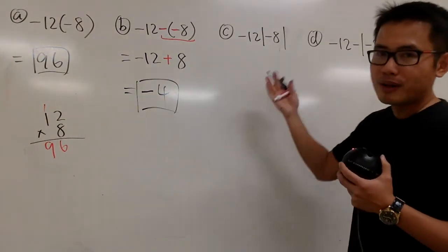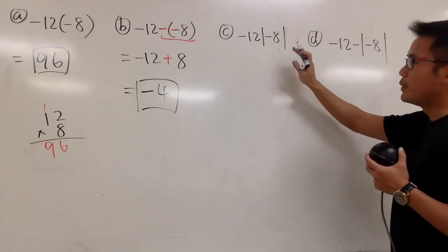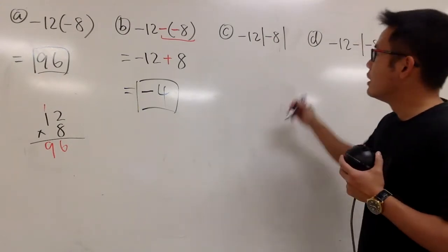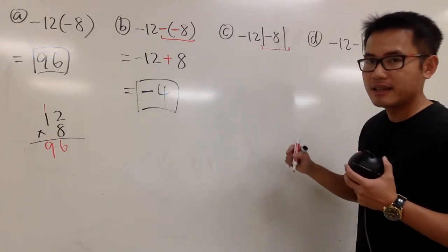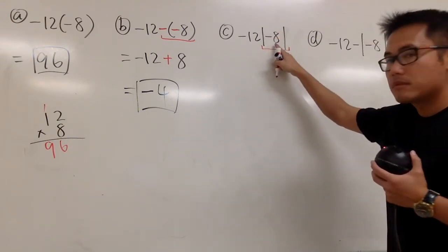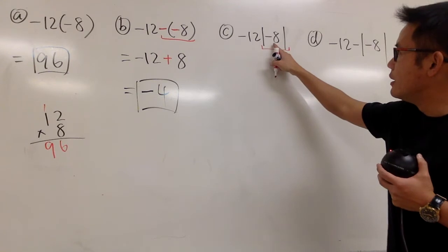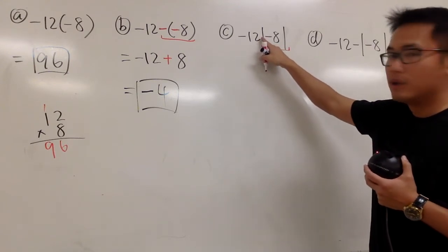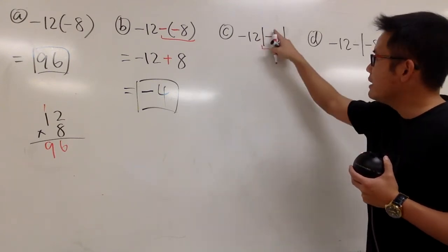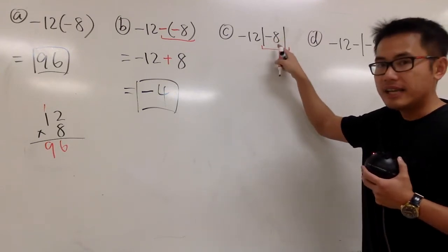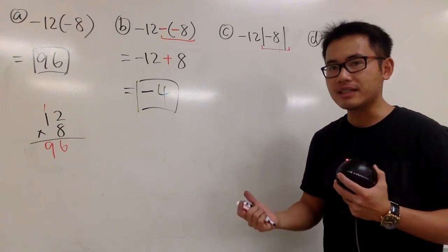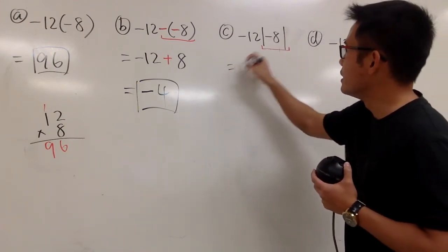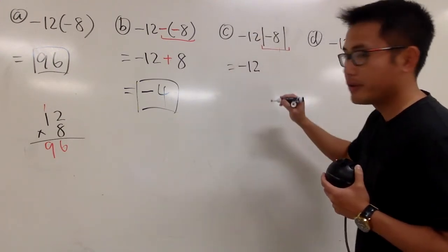Okay, part c, this is the situation where we are dealing with absolute value. You have to remember, what does the absolute value do to a number inside? When we don't have any operation right here, this means multiply. Absolute value makes negative numbers positive. So we still have the negative 12 right here.